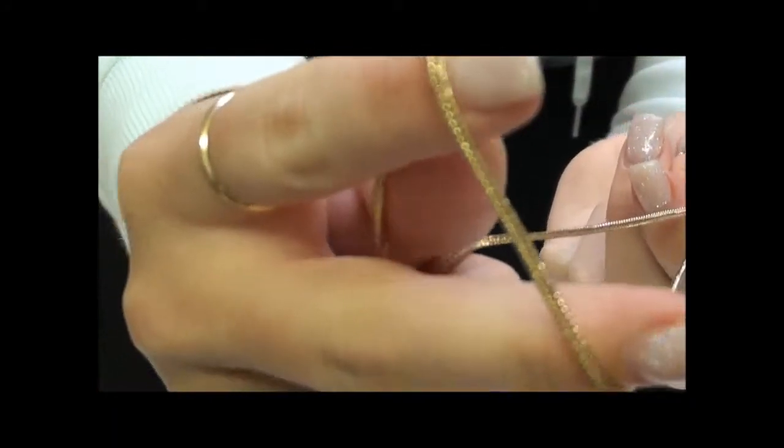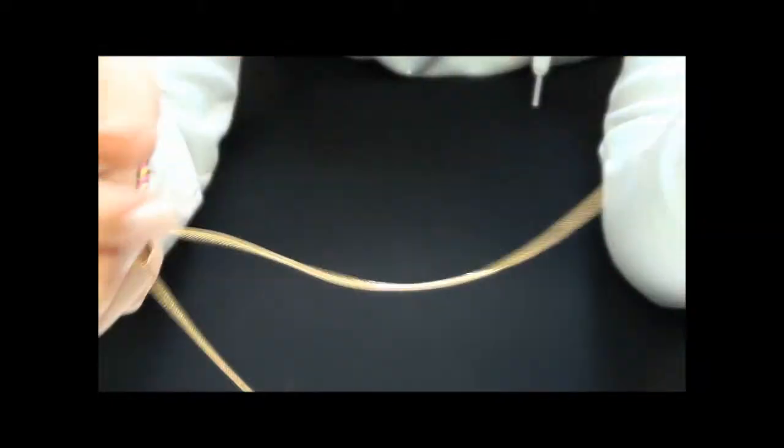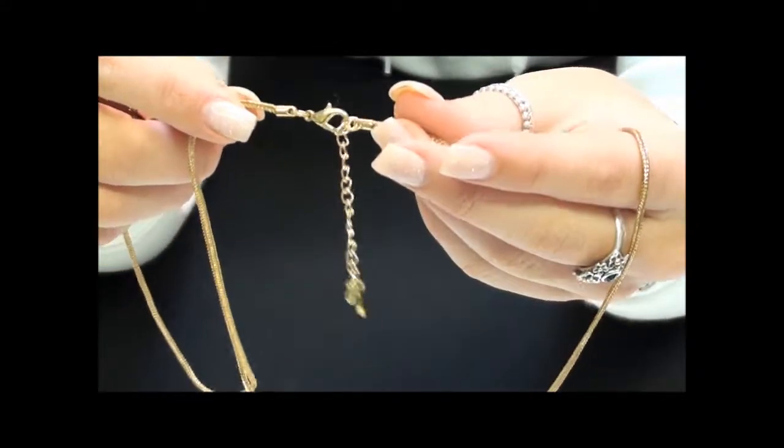The chain itself again is in this beautiful gold color. It's just easily slipped over the top of your head. Otherwise there is a little lobster clasp on the back if you prefer to hook it in that way.